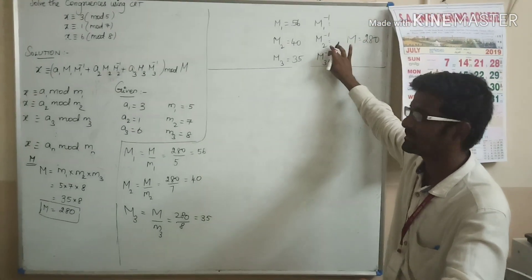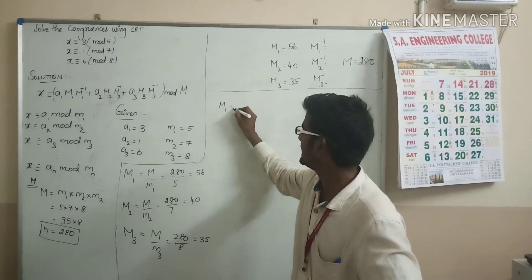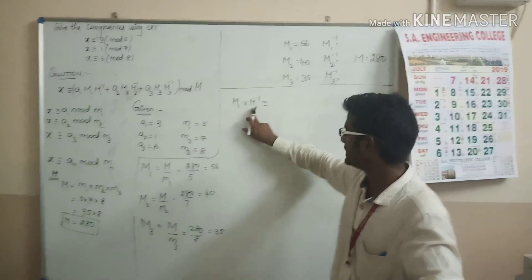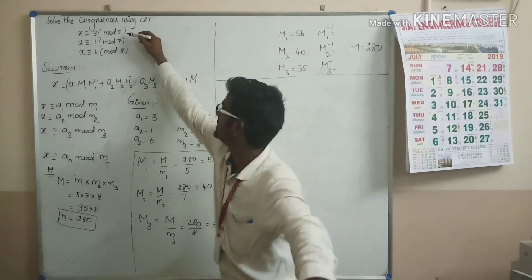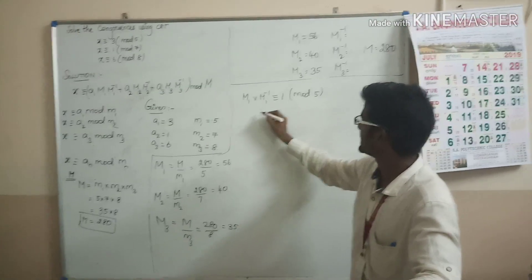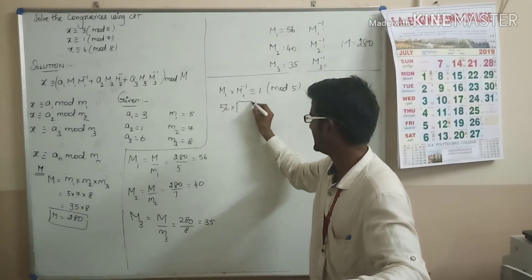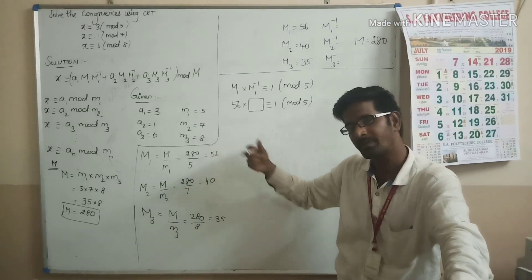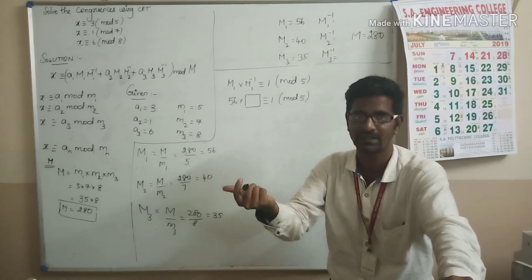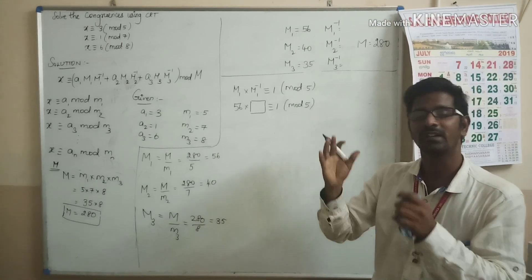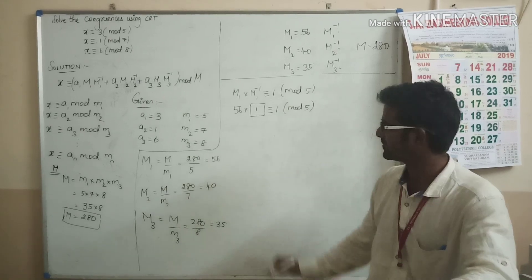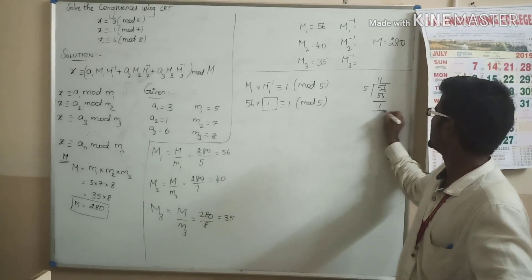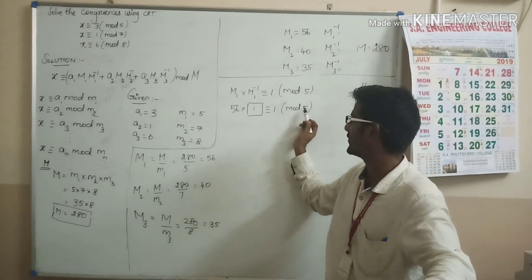We need to find M1 inverse, M2 inverse, and M3 inverse. M1 × M1_inverse ≡ 1 (mod 5). For simplification, we start with 1: 56 × 1 = 56. When 56 is divided by 5, 11 × 5 = 55 and the remainder is 1. So the multiplicative inverse for 56 under mod 5 is 1.